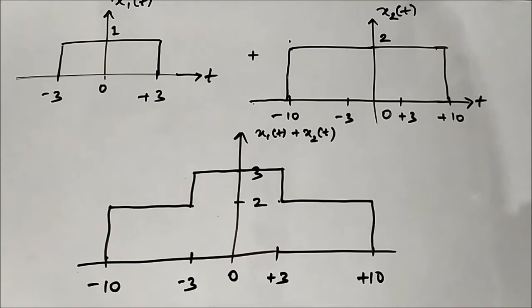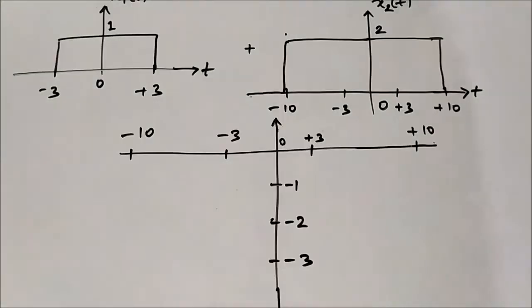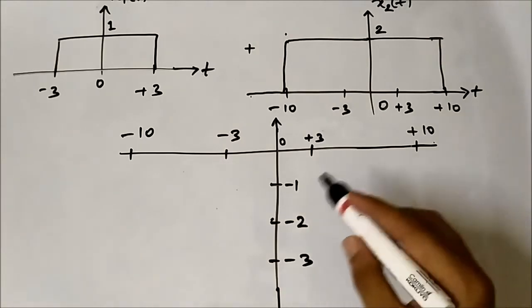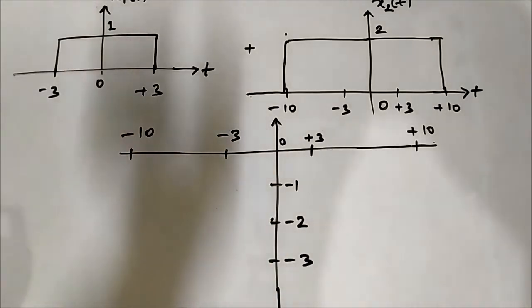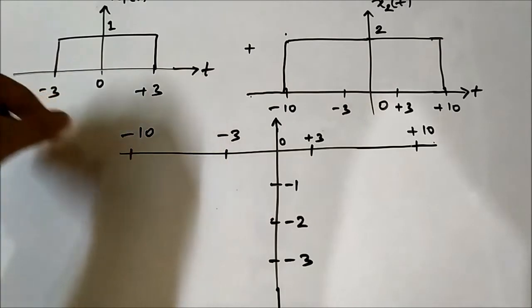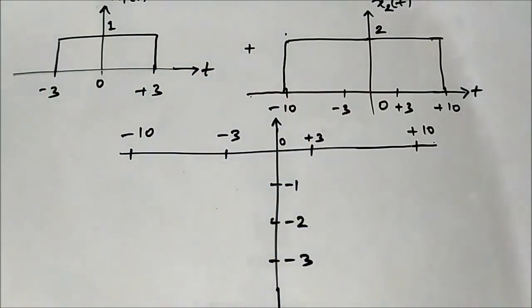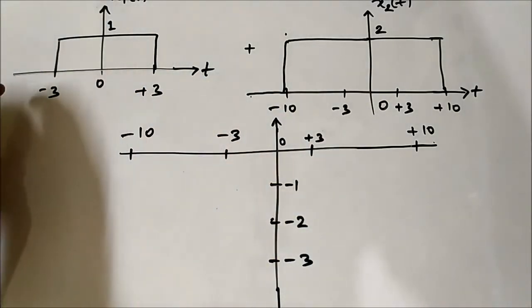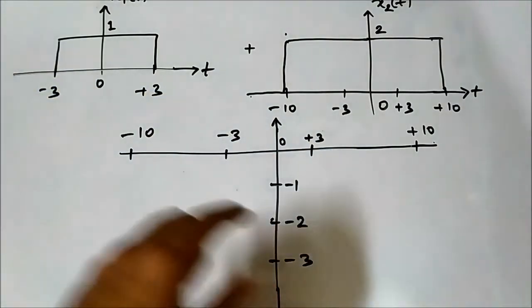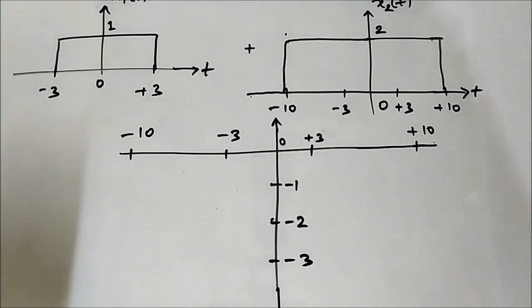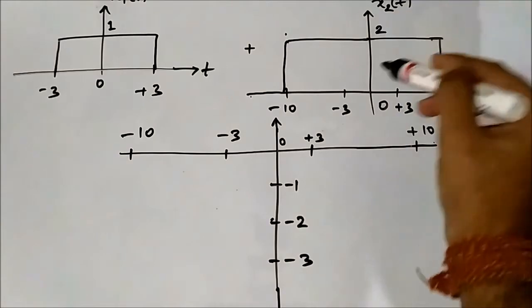Now let us perform x1(t) minus x2(t). We will determine that using the same principle — we consider the amplitude at the respective instance. Again, from minus 10 to minus 3 and from plus 3 to plus 10, x1(t) is 0, and only x2(t) is present.